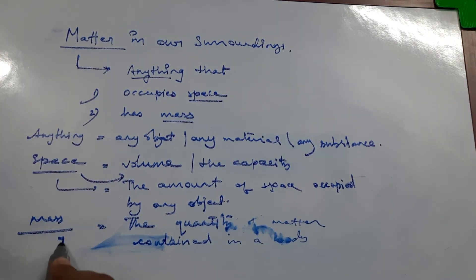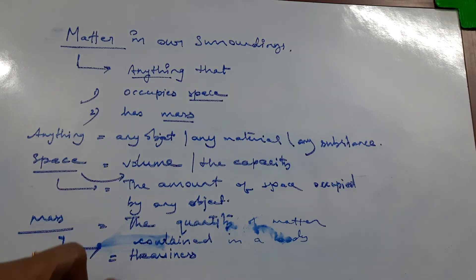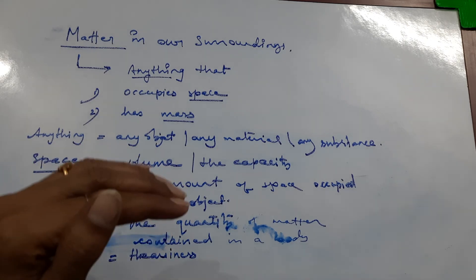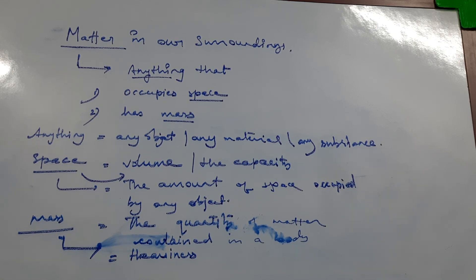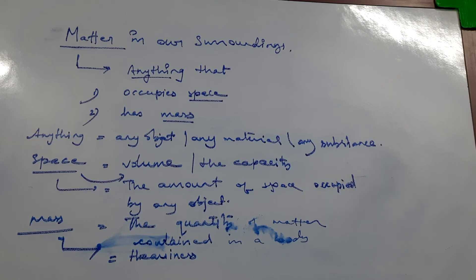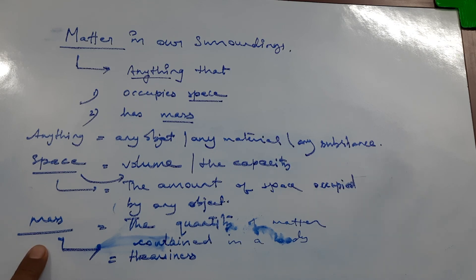You can relate mass with the heaviness of the body. Due to the quantity of matter, our body is heavy or light. So mass is related to heaviness. Remember two points: matter is anything that occupies space — meaning it has some volume — and it has some mass, meaning some heaviness. It could be gas, liquid, or solid. I will explain further how we can show for solid, liquid, and gas that space is occupied, and give examples for mass as well.